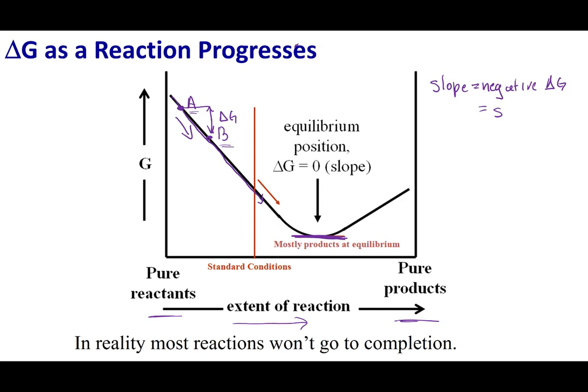But let's put two more points on my graph. Let's say I have point C and D right here. If I were to go from C to D, you guys can measure the slope. C to D means I'm going to have a positive slope or a positive delta G. Now if I have a positive delta G, then I am non-spontaneous. So my reaction won't proceed going from C to D.